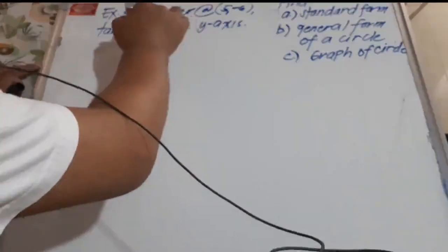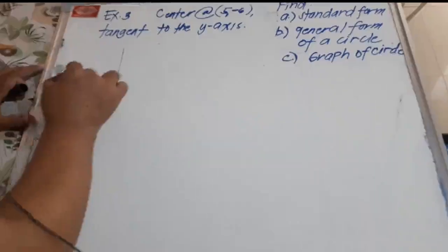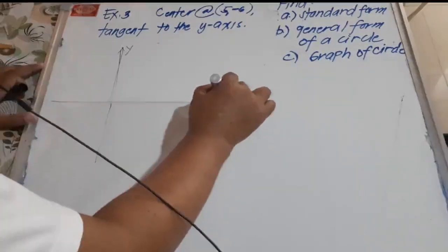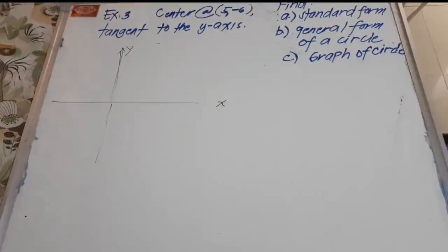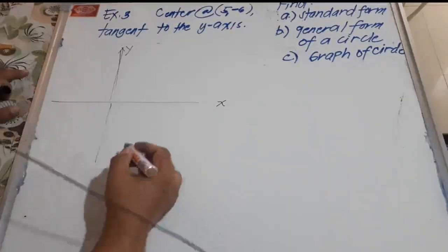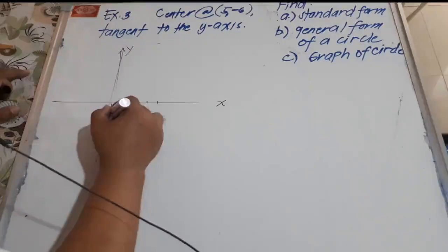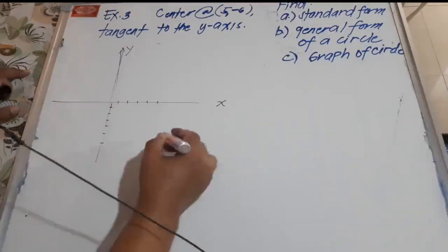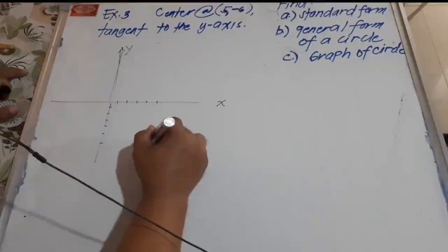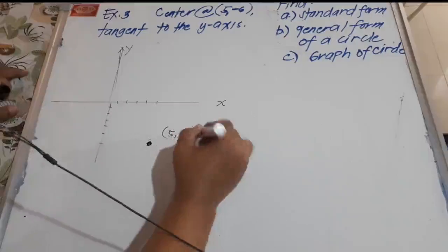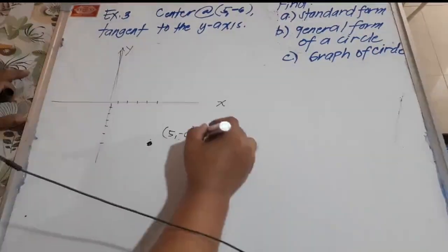We draw the y-axis and the x-axis. Now we locate the center. We count 1, 2, 3, 4, 5 along the x-axis and 1, 2, 3, 4, 5, 6 down along the y-axis. This is the center of our circle, at coordinates (5, negative 6).